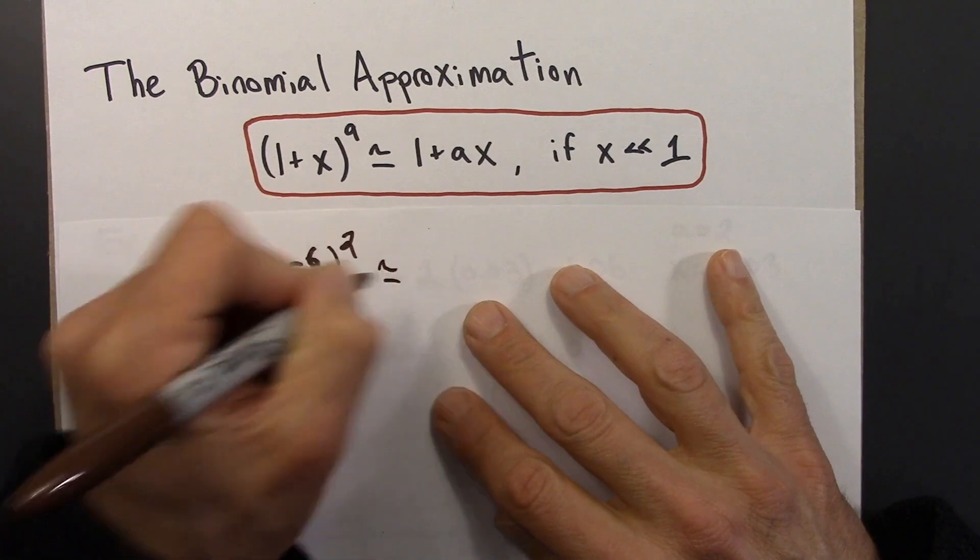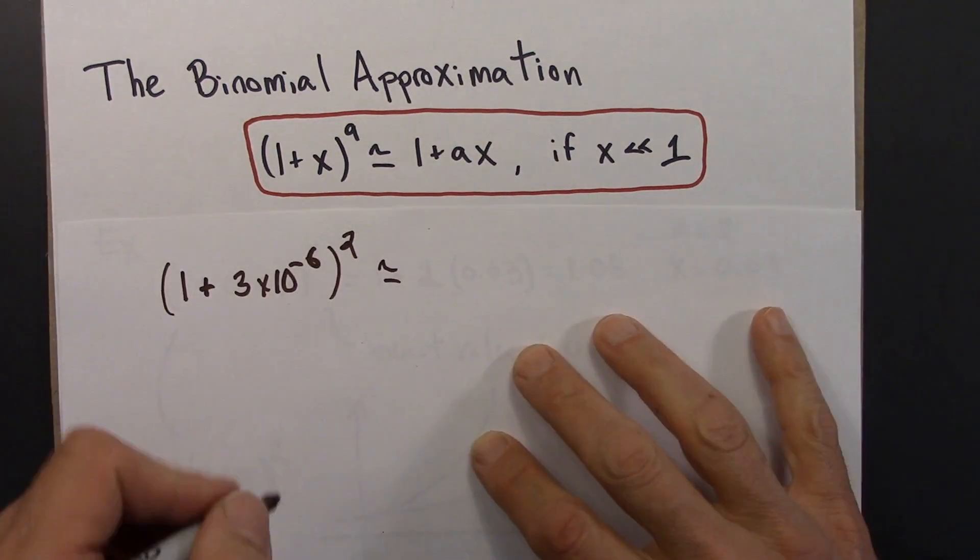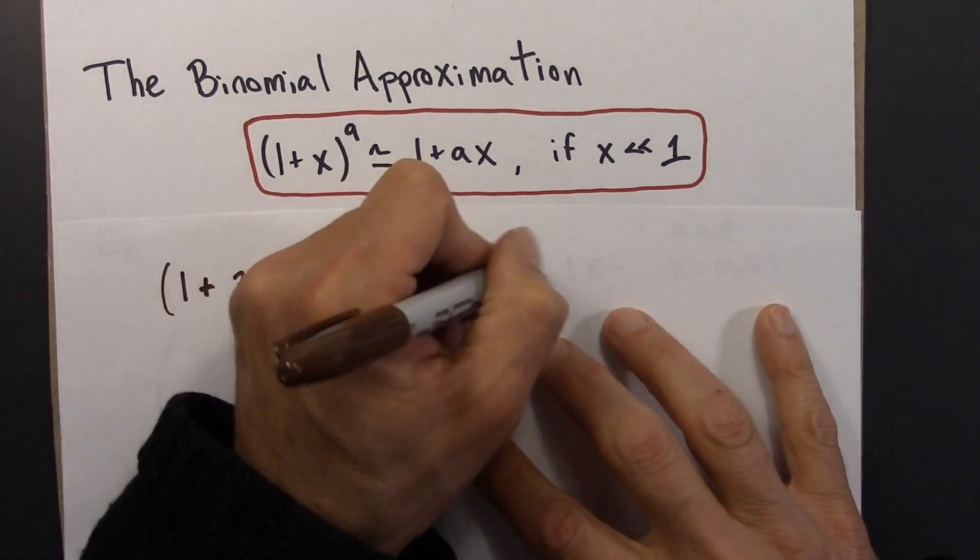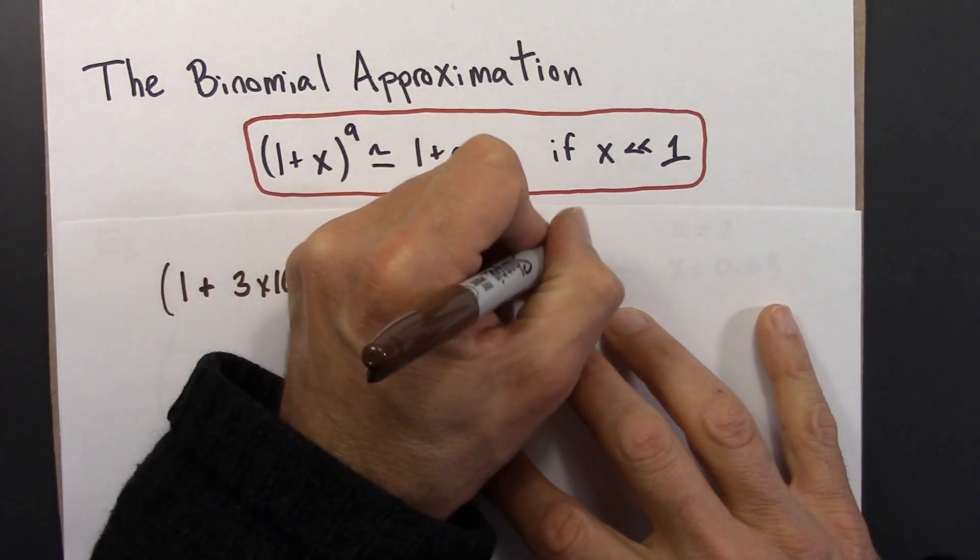Alright, so that's going to be equal to 1 plus ax, a is 2, x is this, 1 plus 2x, 3×10⁻⁶.